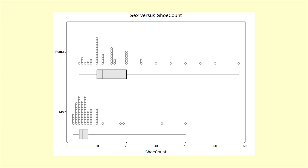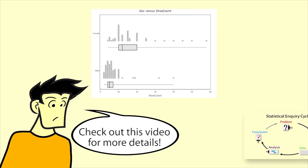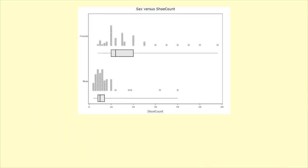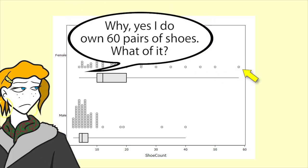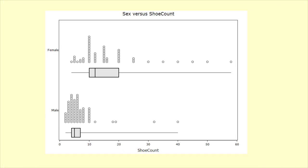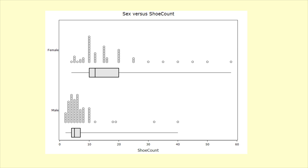This is a dot plot and box plot combination for the number of shoes owned by male and female students. You can find out more about this investigation in our video, The Statistical Inquiry Cycle. Each dot in the dot plot represents the number of pairs of shoes one person says they own. The box plot shows the range, lower quartile, median, and upper quartile for the sample. Our investigative question is: is the median number of pairs of shoes owned by women greater than the median number owned by men? Note that even though our question is specifically about the median, we are also interested in other differences between the two groups.